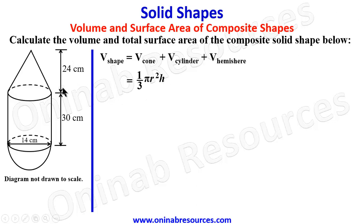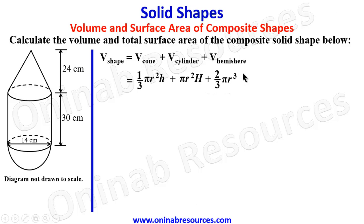To that we add πR²H, which is the volume of the cylindrical body — I've represented the height of the cylinder as capital H. Then we add (2/3)πR³, which comes from the sphere volume formula (4/3)πR³ divided by 2 since this is a hemisphere.